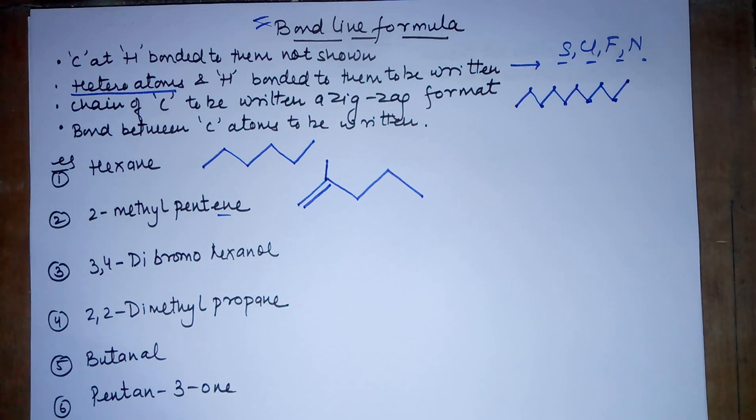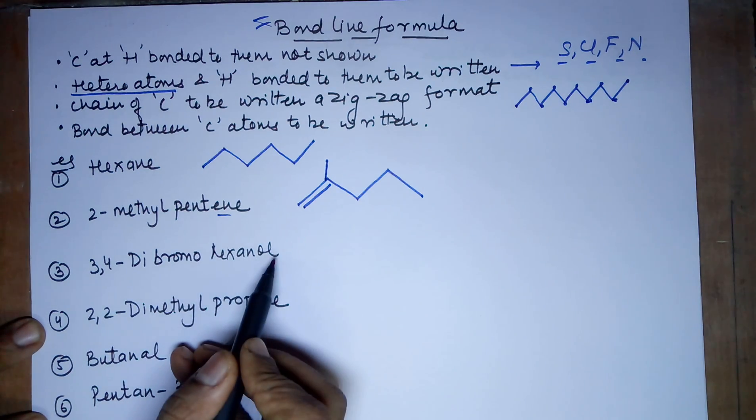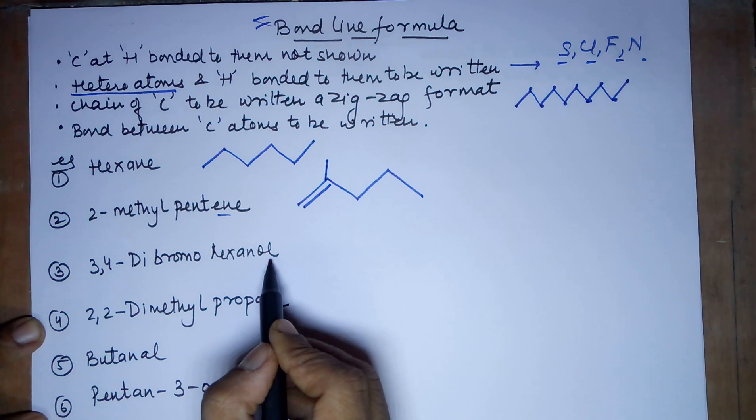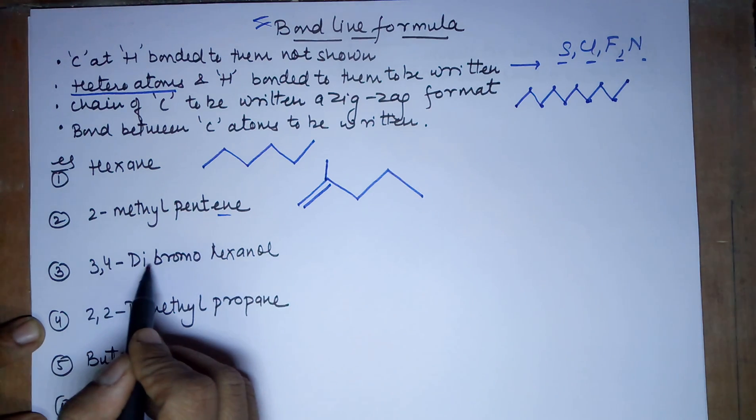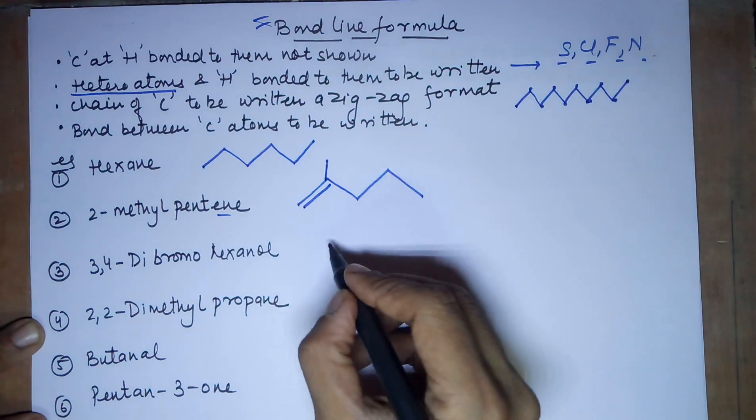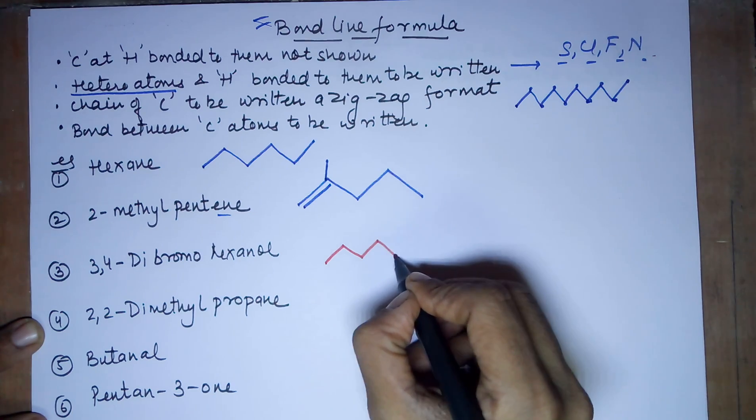The third example has got 3,4-dibromo hexanol. Hexanol means 6 carbons. -ol means an alcohol OH group. O becomes the heteroatom. Position of OH is not given, means it is at the first position. Third and the fourth position have a bromo and bromo needs to be mentioned because it is a heteroatom. 1 carbon, 2 carbon, 3 carbon, 4 carbon, 5 carbon, 6 carbon. 6 done.